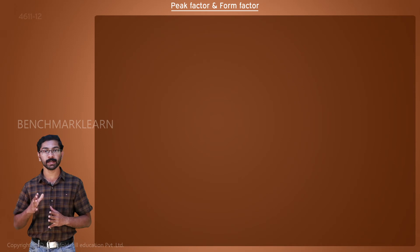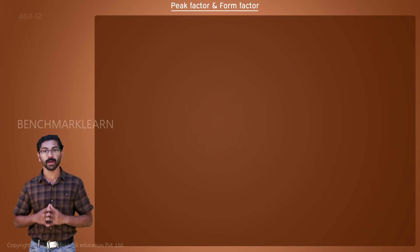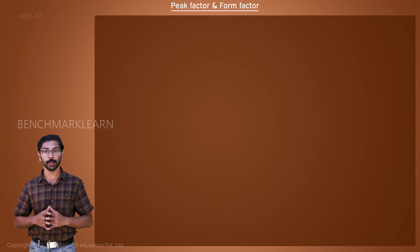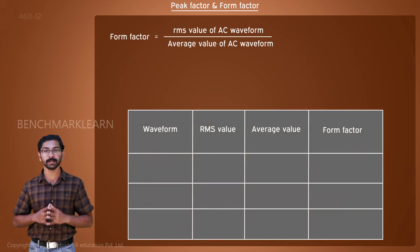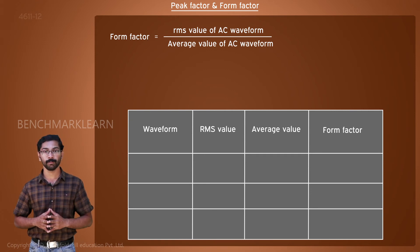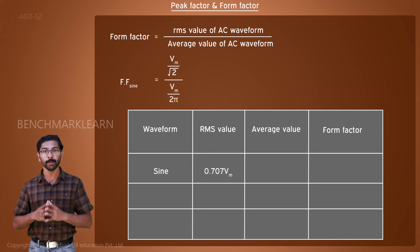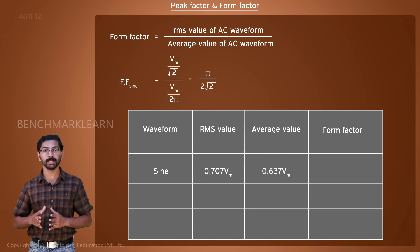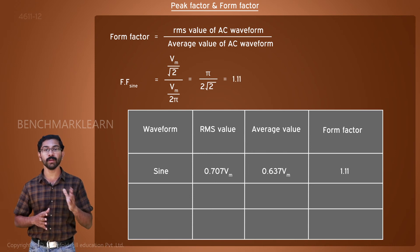Form factor is a ratio of voltages or currents in AC, like peak factor. Form factor is the ratio of the RMS value of a quantity to its average value. Form factor is equal to the RMS value of the AC waveform divided by the average value of the AC waveform. For sinusoidal AC, form factor is equal to Vm/√2 divided by 2Vm/π, which is equal to π/(2√2), which is equal to 1.11.